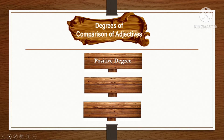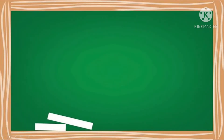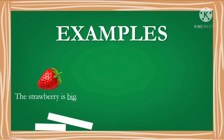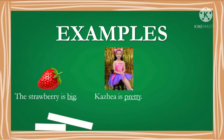These are the positive degree, comparative degree, and superlative degree. In the positive degree, there is no comparison shown. For example, the strawberry is big. Just like Kazea is pretty — pretty describes Kazea, and it is in positive degree because there is no comparison.